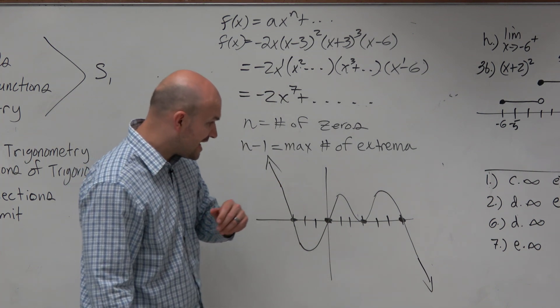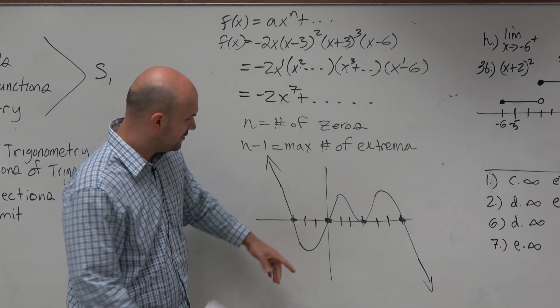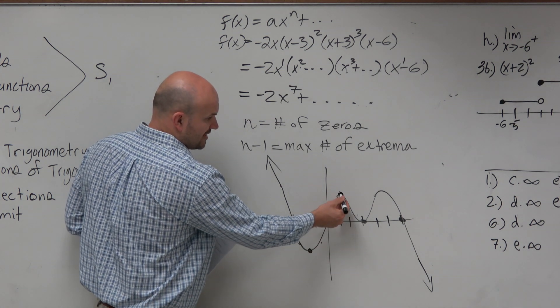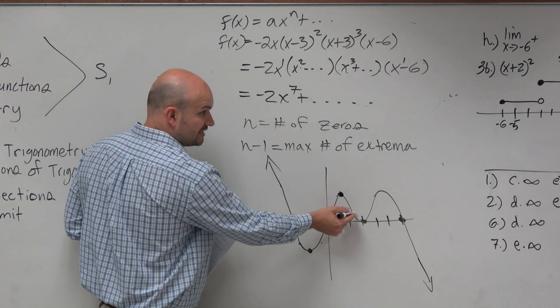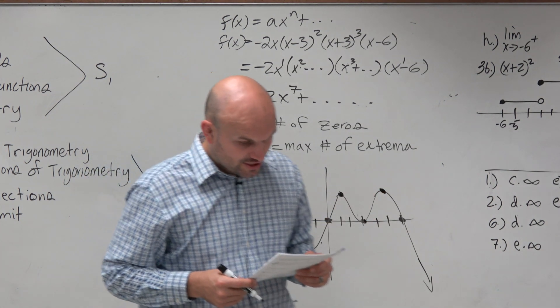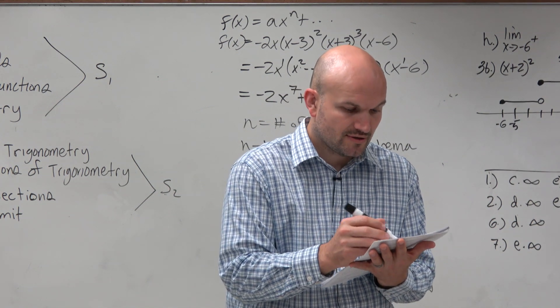So let's go ahead and check our number of extrema. So we have 1, where it changes from decreasing to increasing. We have 2, increasing to decreasing, 3, and 4. So the answer, the correct answer in this one, is 4.